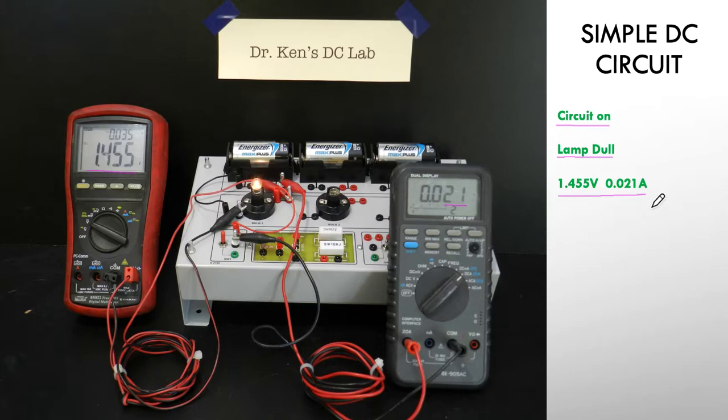So by turning the circuit on with one battery, we're going to get this dull glowing lamp with the appropriate voltages and the appropriate currents being measured.